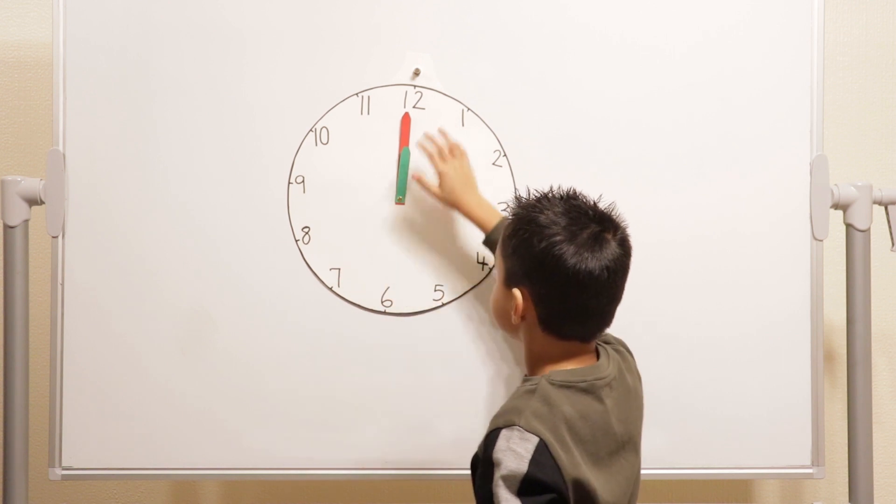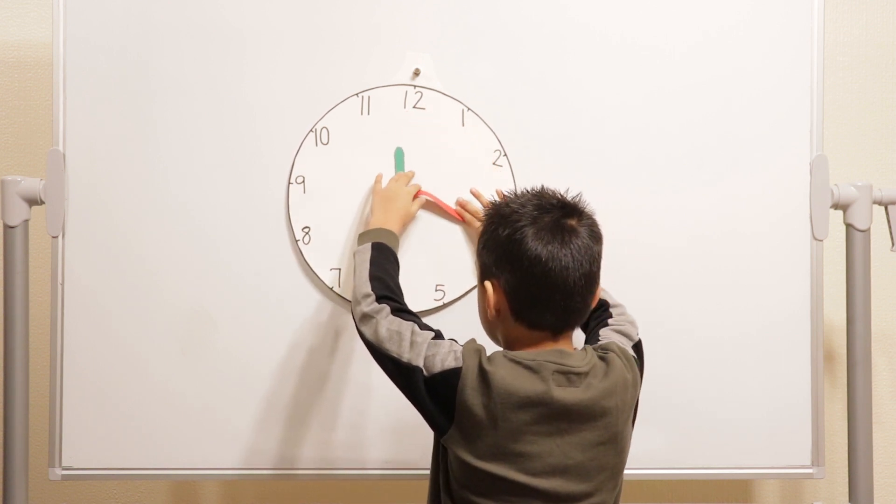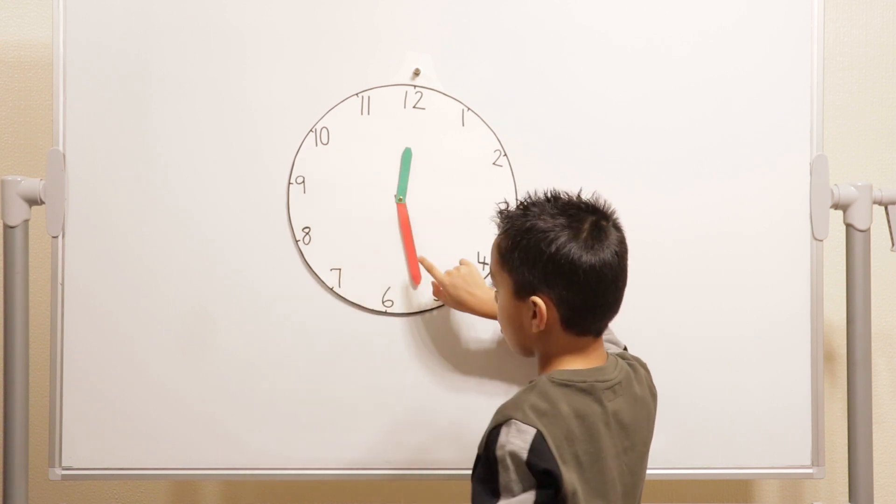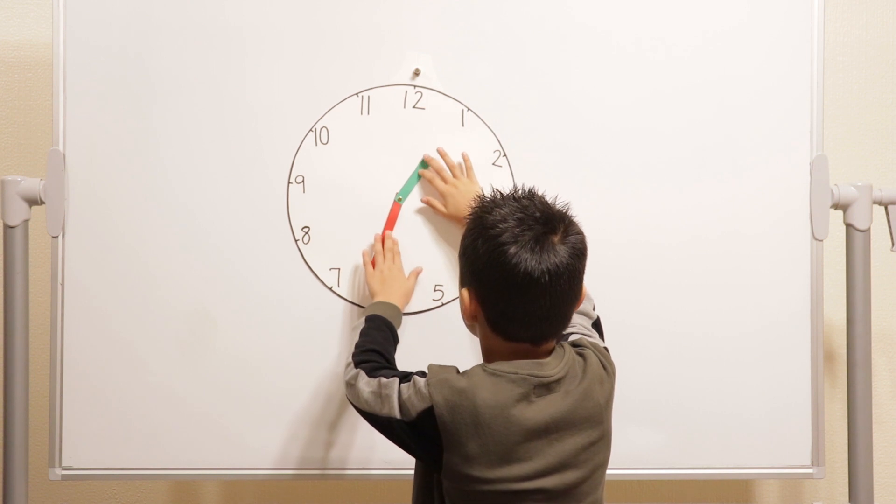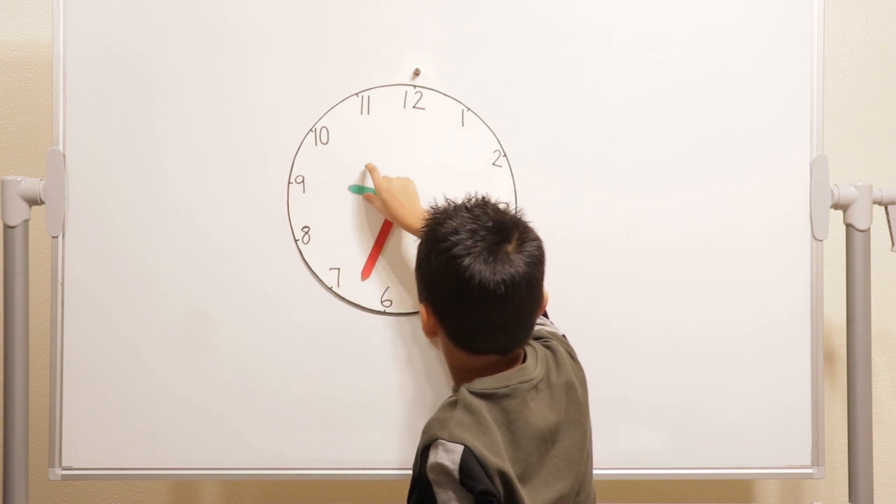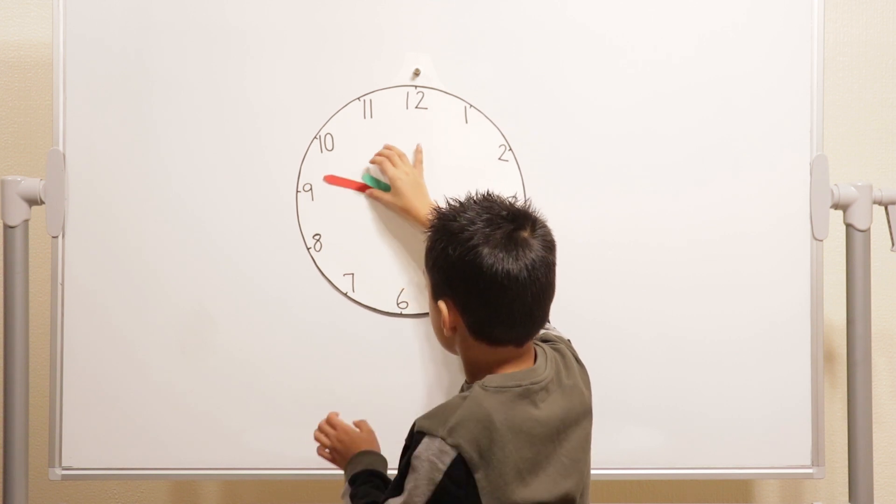Okay, so which one is the minute hand and the hour hand and what's the difference between them? The minute hand is the long one here and the hour hand is the short one here. Okay, and we've put hours in red and green so we can see them easily.